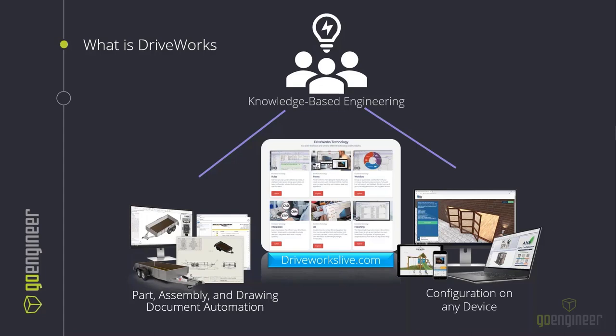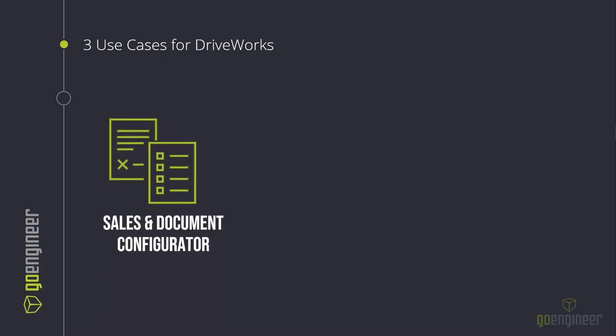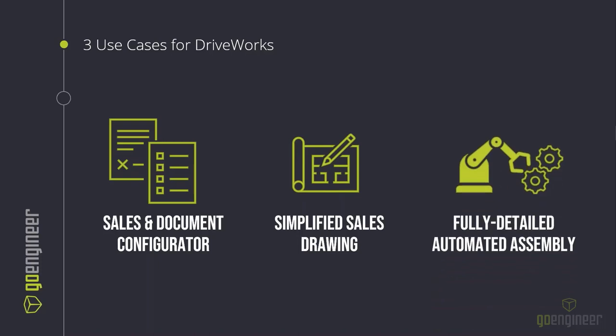This empowers staff and customers to embed automation technology based on what they already know about their products and manufacturing workflows. If you were to automate any part of your workflow today, what would it be? There are three main use cases we see: one, using DriveWorks as a sales and document configurator to generate statements of work, quotes, BOMs, and cover letters; two, creating simplified sales drawings to communicate with customers without releasing intellectual property; and three, creating fully detailed automated assemblies complete with manufacturing documentation.